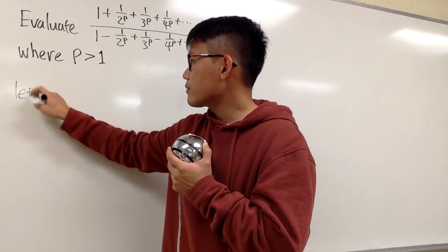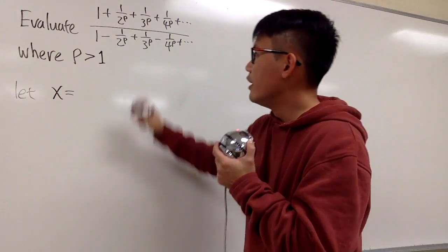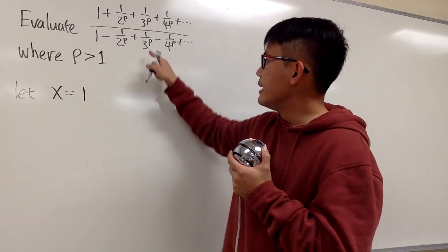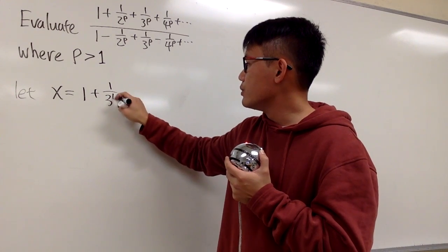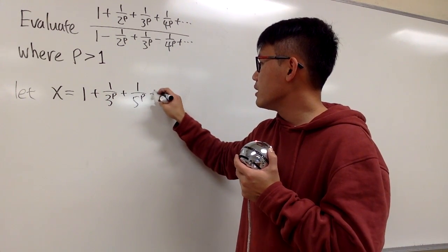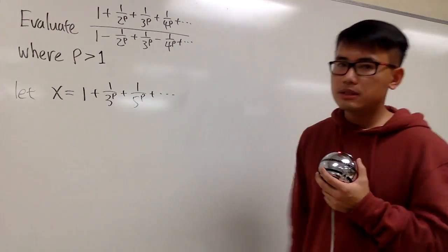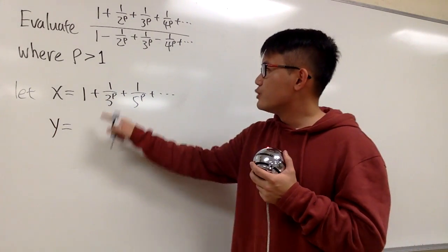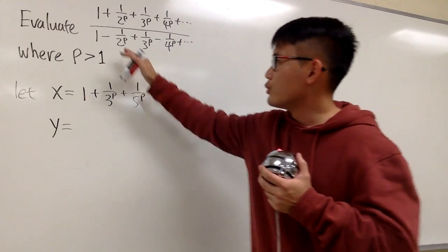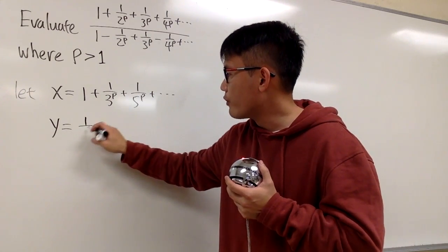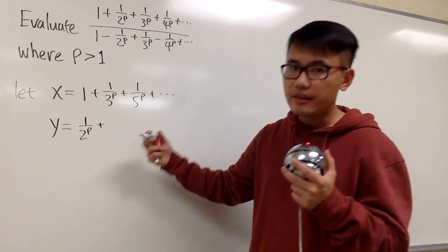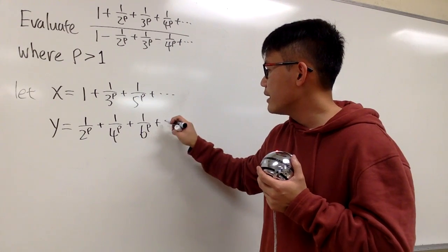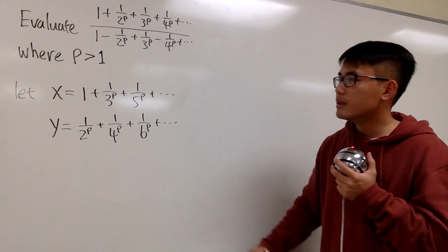First, I will call this x — let me write down the odd terms first. We will have 1, which is the same as 1 over 1 to the p, and then plus 1 over 3 to the p, and then plus 1 over 5 to the p, and so on — all the odd terms. And then let me use y here and write down the even terms, putting down the positive versions: 1 over 2 to the p, plus 1 over 4 to the p, plus 1 over 6 to the p, and so on.